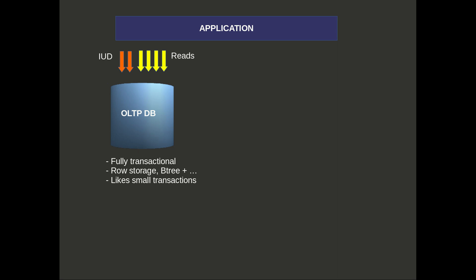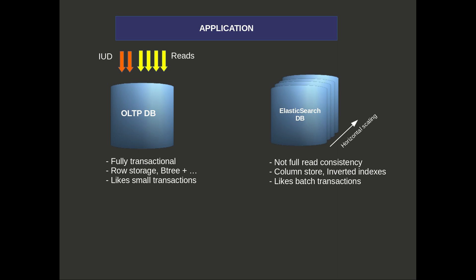What we're doing is adding Elasticsearch to our application. It's not going to give us the same read consistency, but it's a column store using inverted indexes. And generally speaking, it likes batch transactions, though Elasticsearch have done a good job of mitigating those sorts of issues with flush delays and background merging of segments.